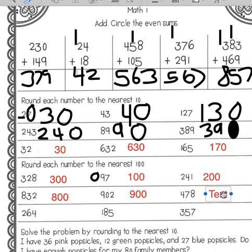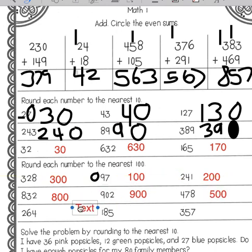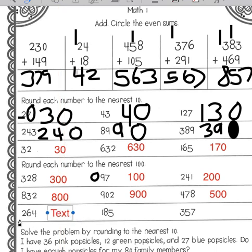Four hundred seventy-eight: we have a four in the hundreds place, seven in the tens place. This is greater than five, so this is going to round up to 500. Two hundred sixty-four: two in the hundreds place, six in the tens place, this is going to cause us to round up to 300.